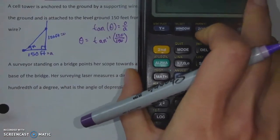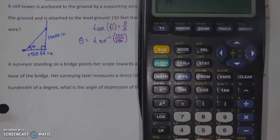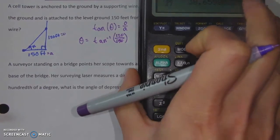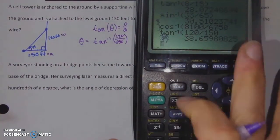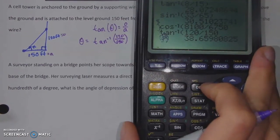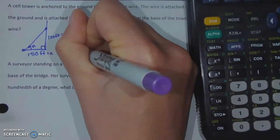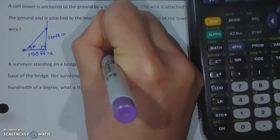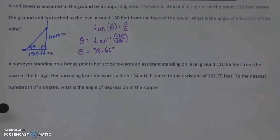That is wonderful calculator work because it's not a hard thing to type in. That gives us 120 over 150, and a final answer of 38.6598, so 38.66. Of course, we are in degrees. So make sure that you mark those as degrees.